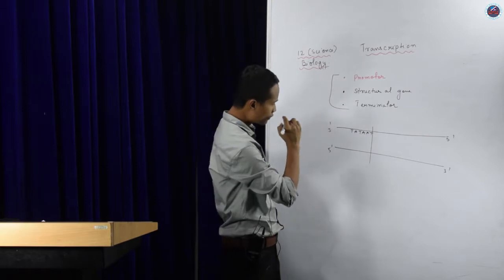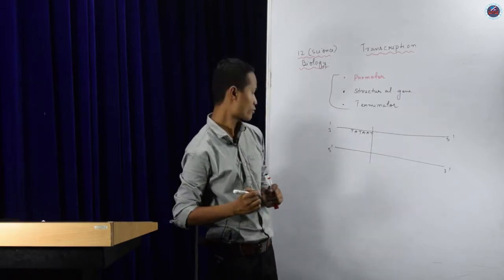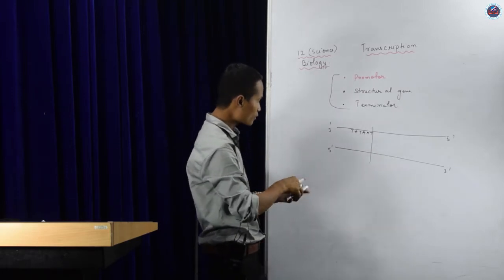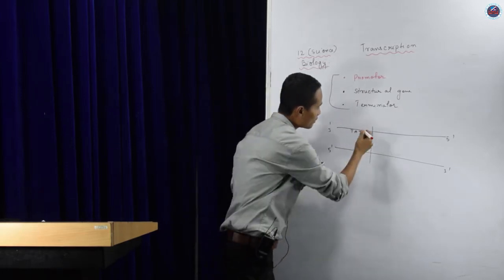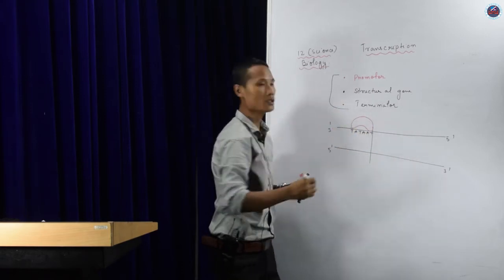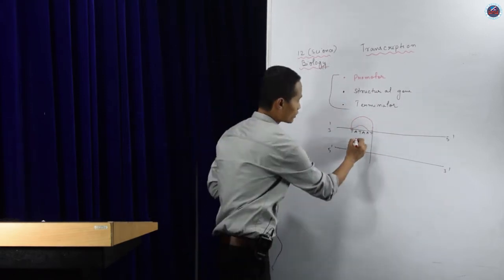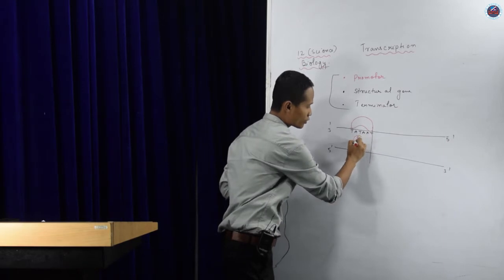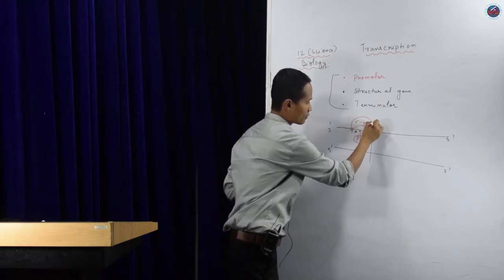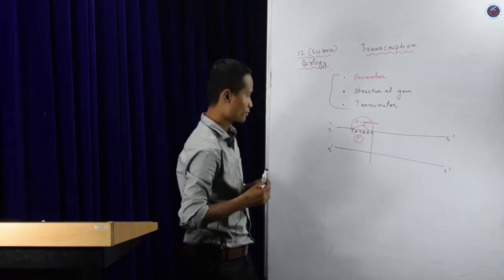The first important protein or factor that comes into action is the sigma factor. This sigma factor will go and bind to the promoter region. Once it binds to the promoter region, the next step follows.